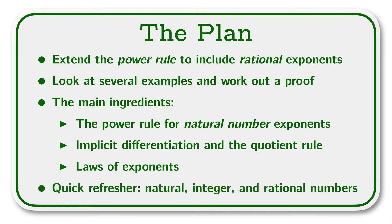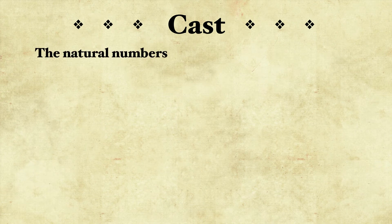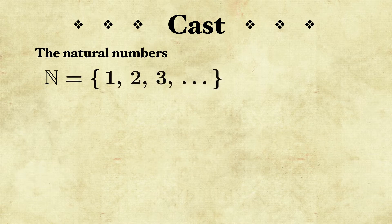We're also going to have a quick refresher on the nature of natural numbers, integers, and rational numbers, just to make sure we understand what these key players are. The natural numbers are often denoted with a blackboard bold N. They're essentially the counting numbers: 1, 2, 3, and so on.